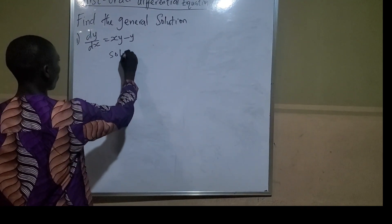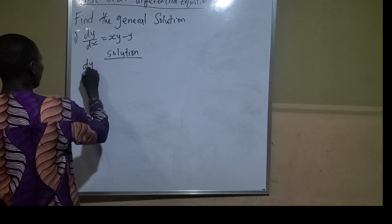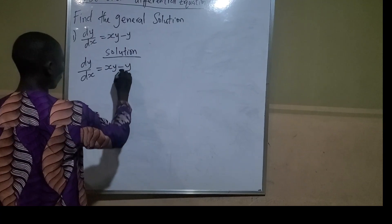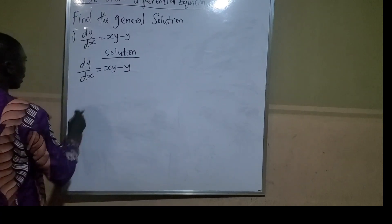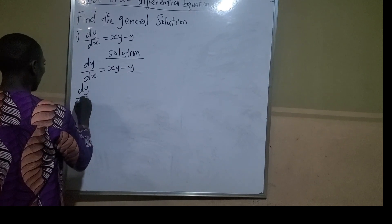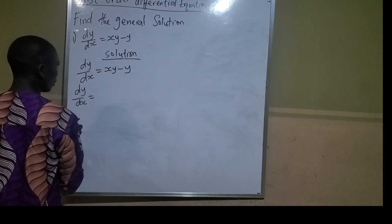So what we do here is write the solution. We have dy/dx equals xy minus y. Now, what is common here? It is y.